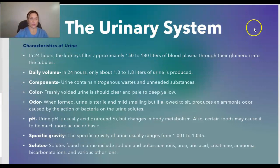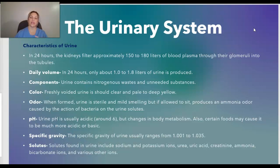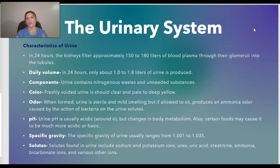In 24 hours, the kidneys filter approximately 150 to 180 liters of blood plasma through their glomeruli into the tubules, yet only about 1.0 to 1.8 liters of urine is produced. Urine contains nitrogenous waste and unneeded substances. Freshly voided urine should be clear and pale to deep yellow in a healthy individual.